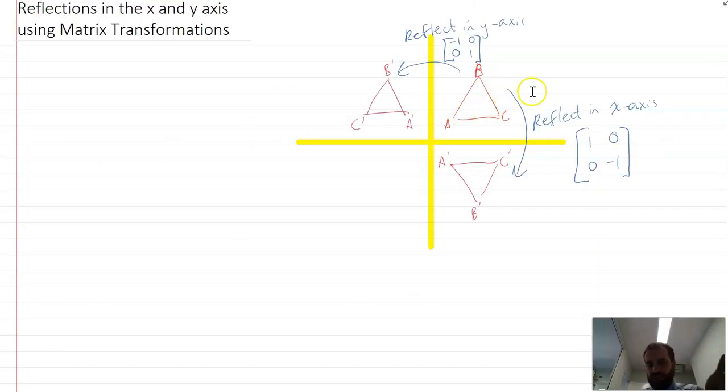So here's kind of a summary. If you want to reflect in the x axis, here's your transformation matrix. If you want to reflect in your y axis, this is your transformation matrix right there.